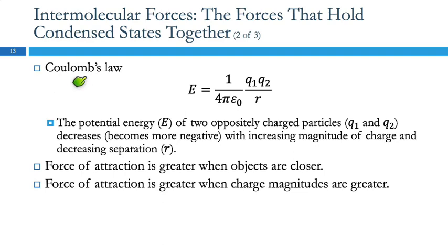We've mentioned Coulomb's Law before. What we're interested in is Q1 times Q2 divided by R. The potential energy—how attracted these particles are to each other—depends on the product of their charges and is inversely dependent on the radius. Think about magnets on a refrigerator: a strong magnet sticks hard, a weak magnet less so. If you add pieces of paper, increasing the distance just a little, the magnet won't stick at all. The force of attraction is greater when objects are closer together and when the charge magnitudes are greater.